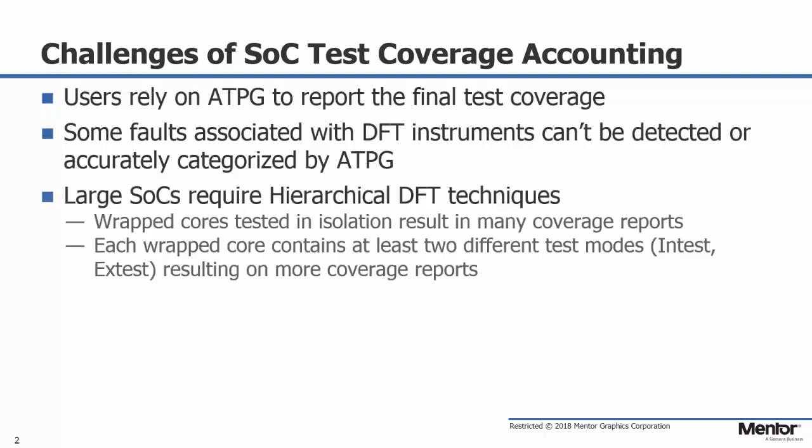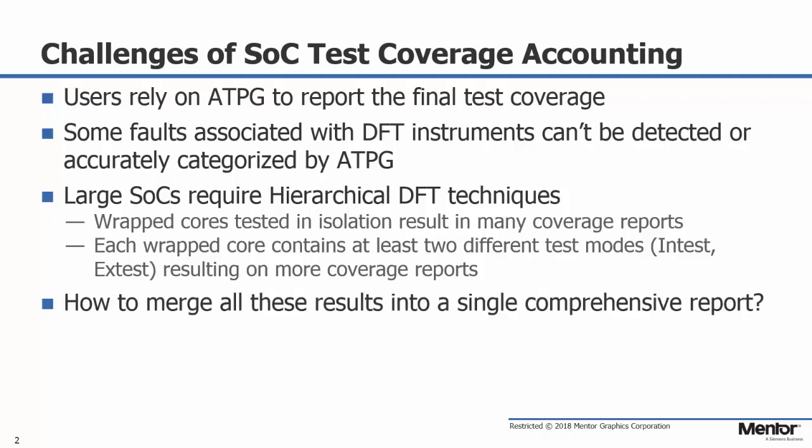As SoC designs get bigger and consist of more and more physical design cores, it has become increasingly common to use hierarchical DFT techniques. Individual wrapped cores are tested in isolation from each other, resulting in many coverage reports, and each wrapped core operates in at least two different test modes — for example in-test and at-test — producing separate coverage reports as well. You can end up with multiple coverage reports for each core, multiplied by tens or even hundreds of core instances. The challenge is how to merge all these different sources of test coverage information — DFT instruments not tested by ATPG or separate hierarchical cores — into a single comprehensive coverage report.